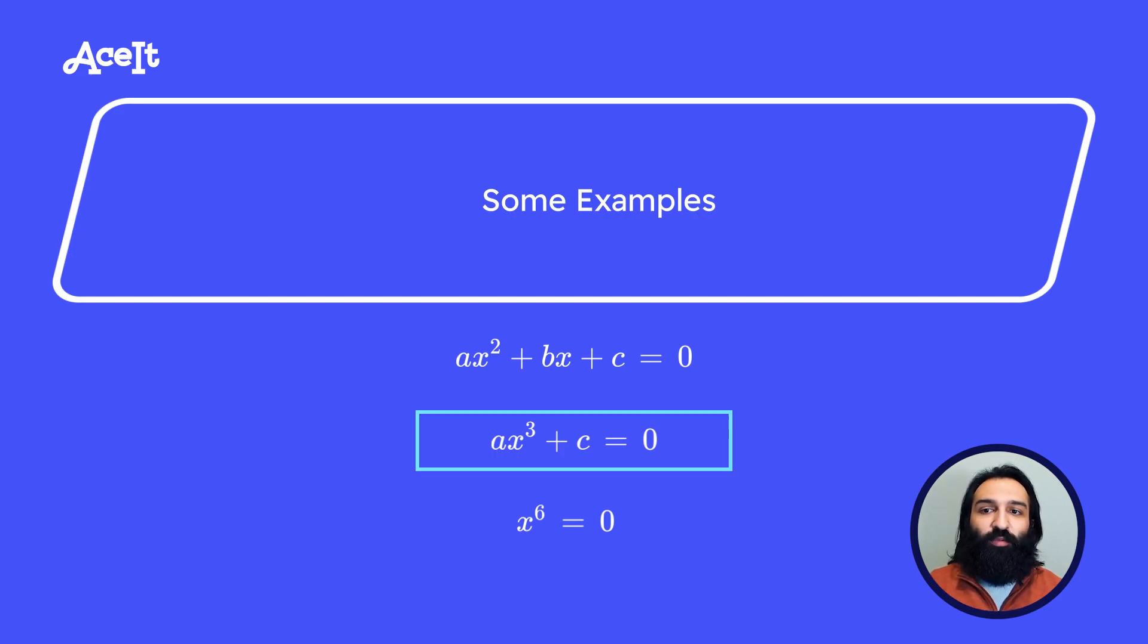In the middle equation, we can see that the x is raised to power of three. This is called a cubic. This is also a non-linear equation because it's raised to power higher than one.